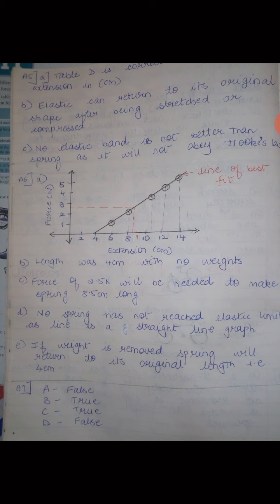Question 6C: what force would be needed to make the spring 8.5 centimeters long? The value is taken from the graph. Between 8 and 10 is 9, and between 8 and 9 is 8.5. Drawing a dotted line up from 8.5 on the x-axis and moving left to the force axis, the force at 8.5 cm extension is 2.5 Newtons.